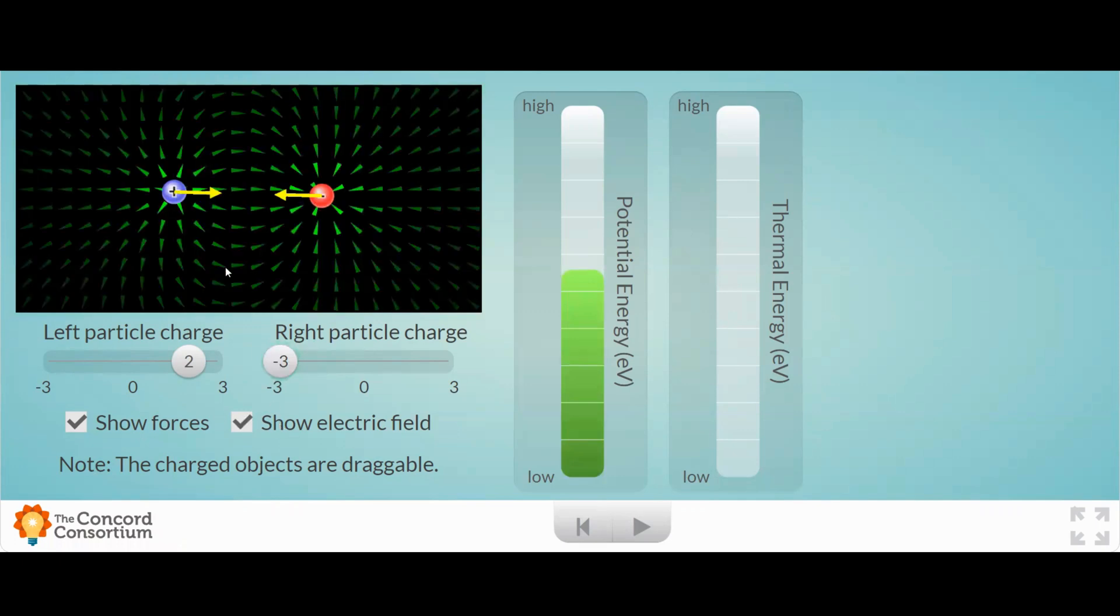So the electric field just shows you that if you put a positive charge at a place, it's going to follow those arrows. And the brighter the arrows, the stronger the electric field is at that point.